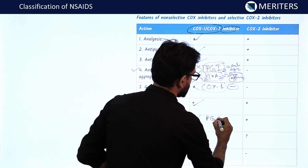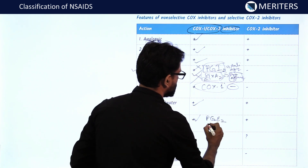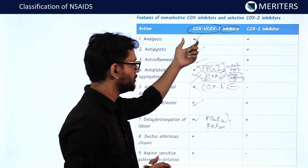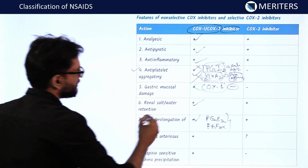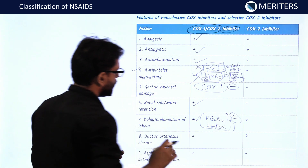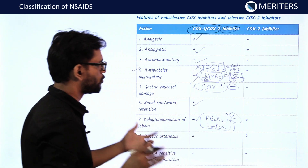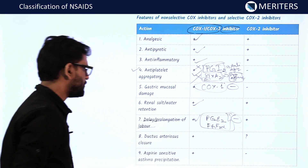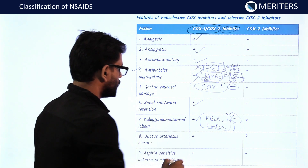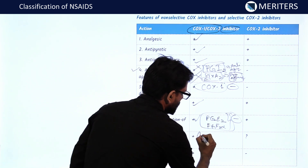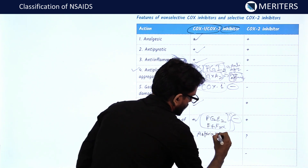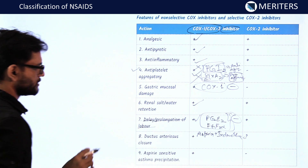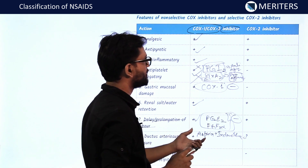Prolongation of labor occurs because PGE2 and PGF2-alpha are responsible for uterine contractions. Giving COX-1 and COX-2 inhibitors inhibits production of these prostaglandins, delaying or prolonging labor. Regarding ductus arteriosus closure, aspirin in combination with indomethacin is generally used to close the ductus arteriosus.